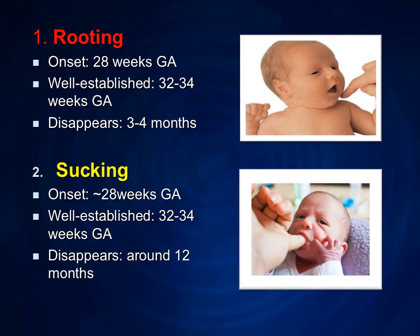Next is the sucking reflex. Its onset is around 28 weeks of gestational age, well established at 32 to 34 weeks, and disappears around 12 months. When you enter your little finger in the child's mouth, it tries to suck your finger — this is the sucking reflex. Importantly, the rooting, sucking, and sucking-swallowing combination is very important for starting breastfeeding in a child.